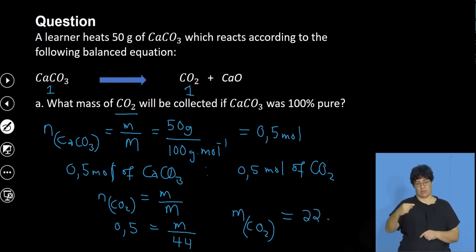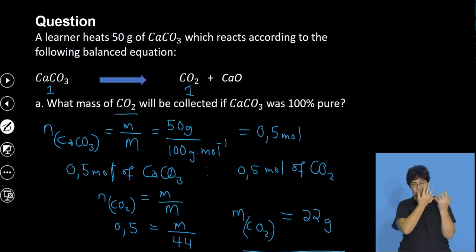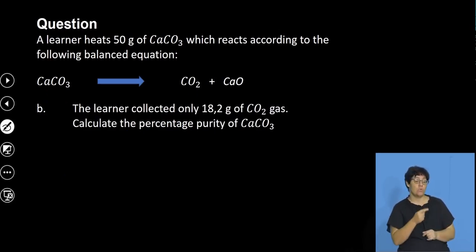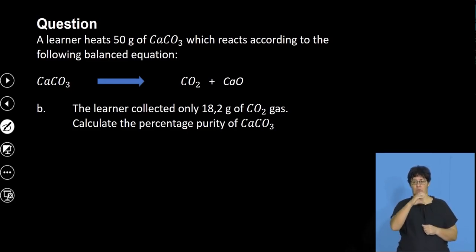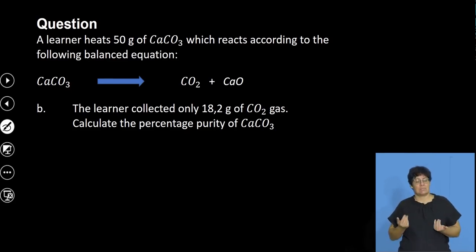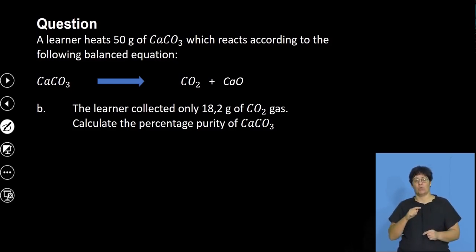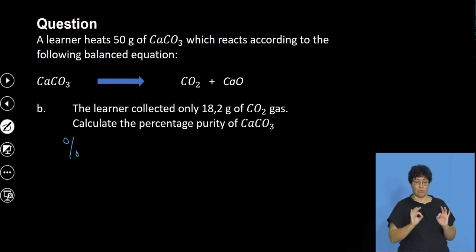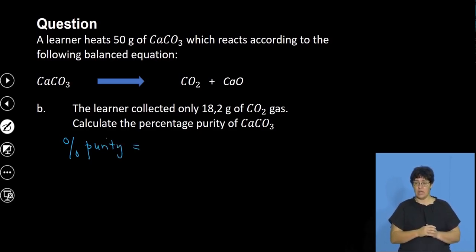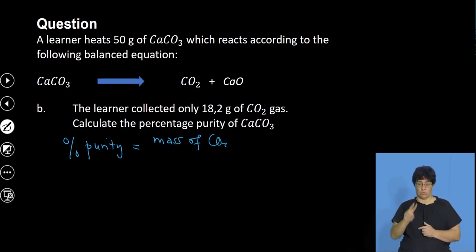The mass of carbon dioxide collected if the sample was 100% pure equals 0.5 × 44 = 22 grams. That's what the first part of the question required. The follow-up states that the learner actually collected 18.2 grams of carbon dioxide gas, and asks us to calculate the percentage purity of the calcium carbonate.